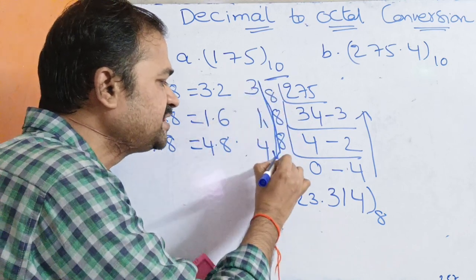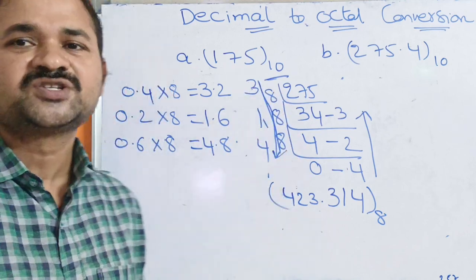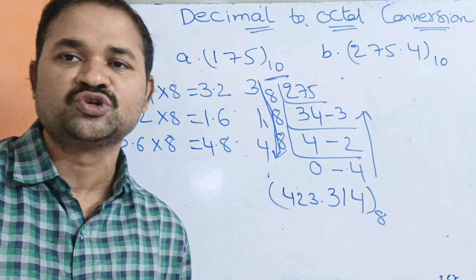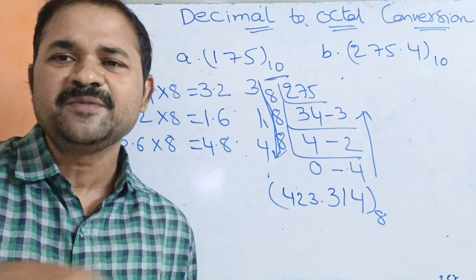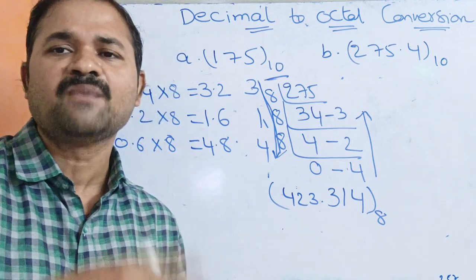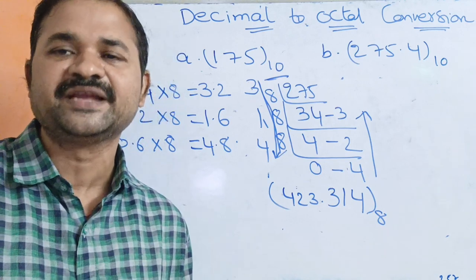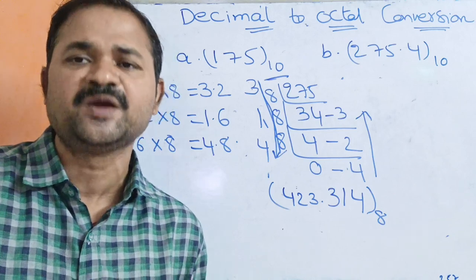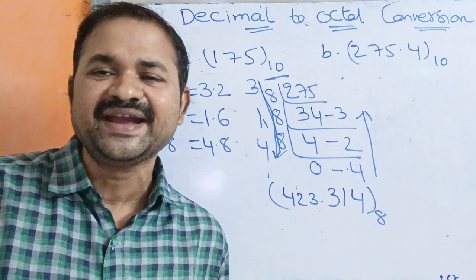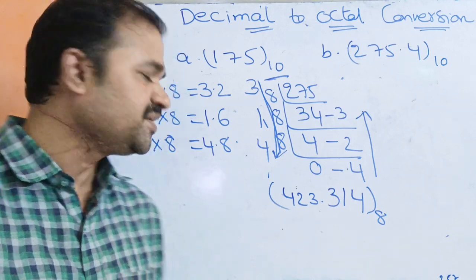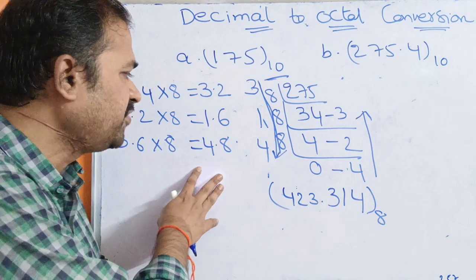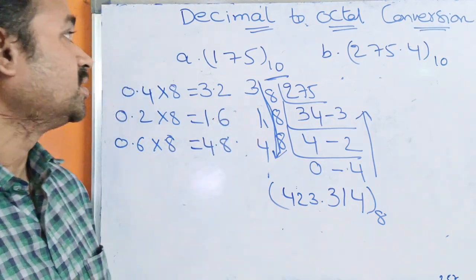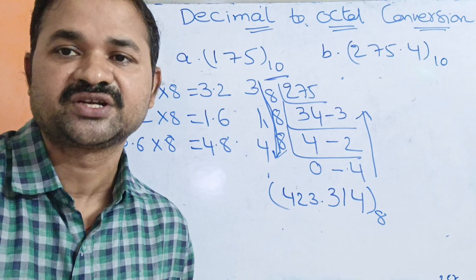Here we have considered only 3 points of accuracy. If it is an objective or multiple-choice question, then depending upon the answer we have to perform more repetitions. If there are 5 digits after the dot in the answer, then we repeat for 2 more steps. This is about decimal to octal conversion.